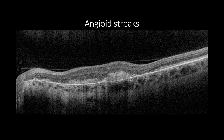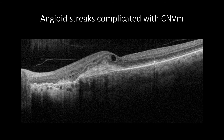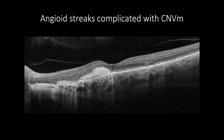In angioid streaks, there is an alteration of Bruch's membrane with subretinal fibrosis and atrophy. However, when angioid streaks get complicated with choroidal neovascularization, it will have a subretinal hyperreflective mass with increased retinal thickening and intraretinal fluids with or without subretinal fluids. This cross-section for the same case post-treatment with intravitreal injection of VEGF-blocking agents shows resolved cystic changes and macular edema with subretinal fibrosis.